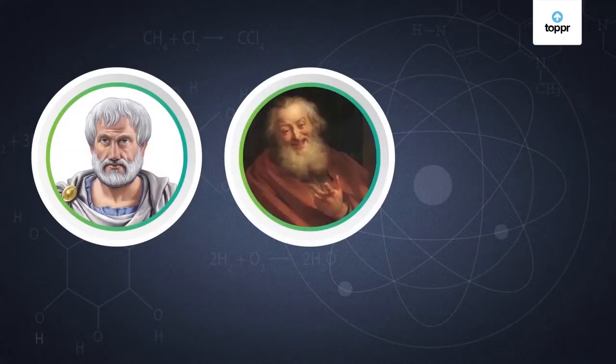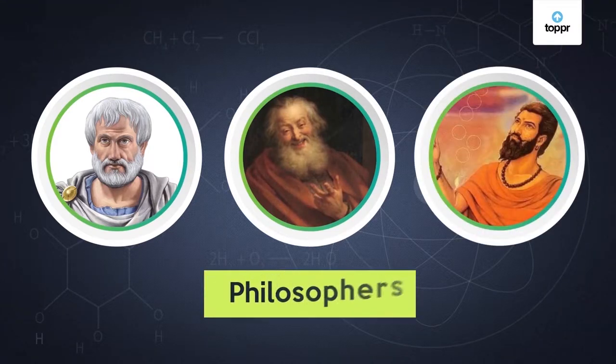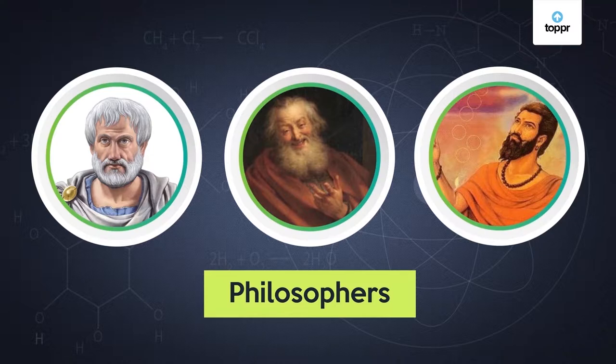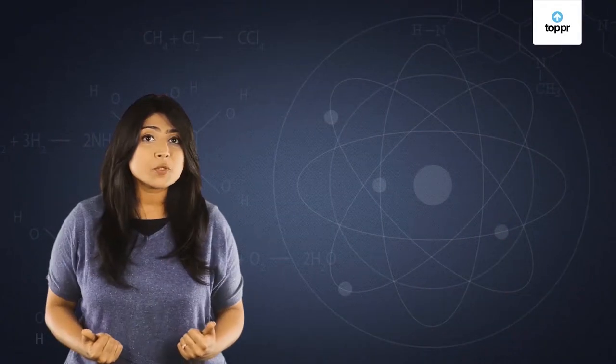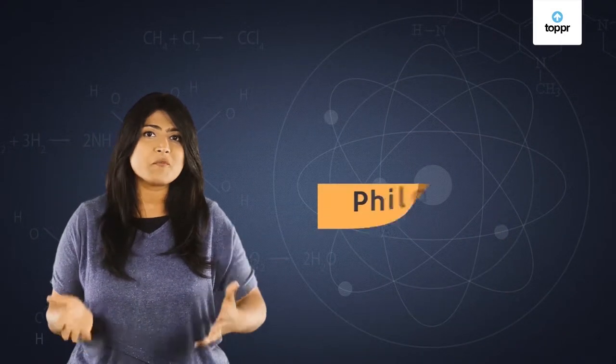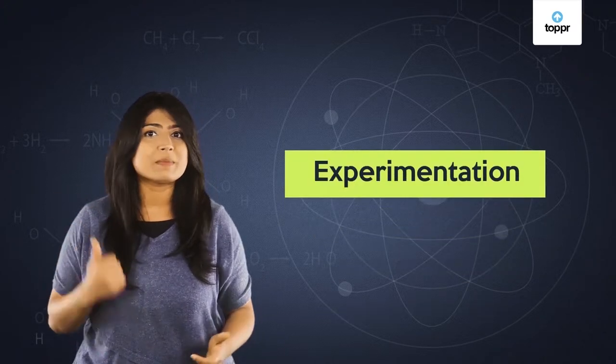Aristotle, Democritus and Kannad were philosophers whose ideas were not based on experimental observations. As years progressed, there was a shift from philosophy to experimentation.